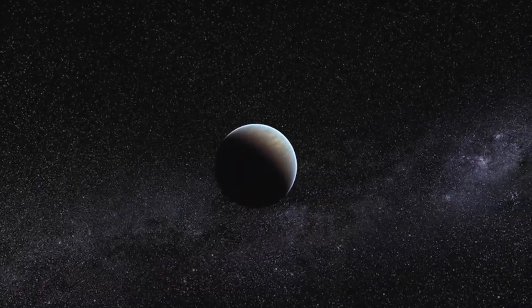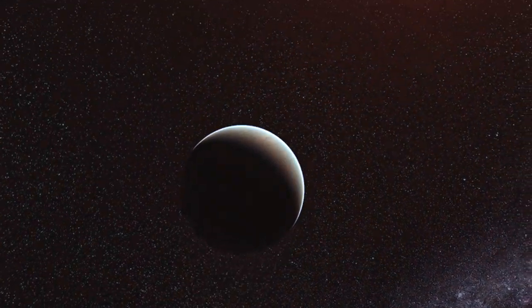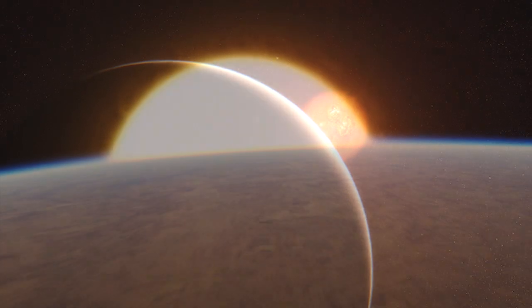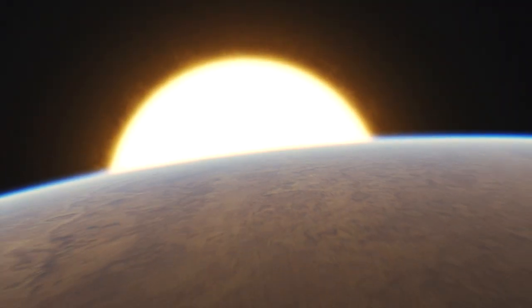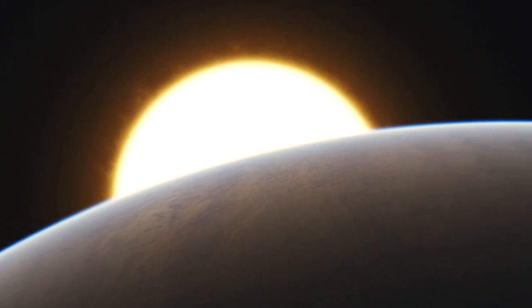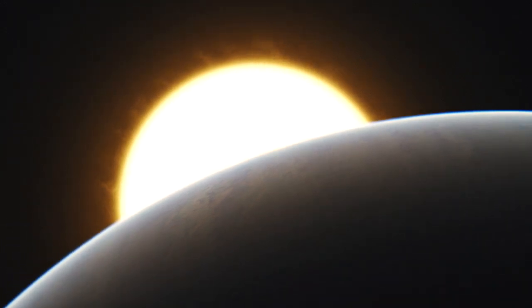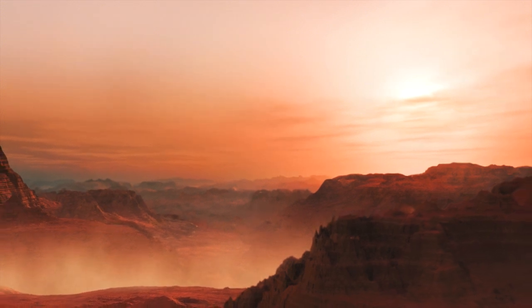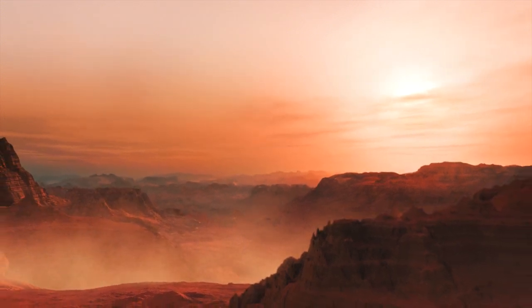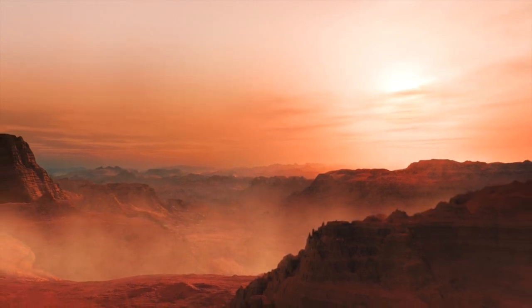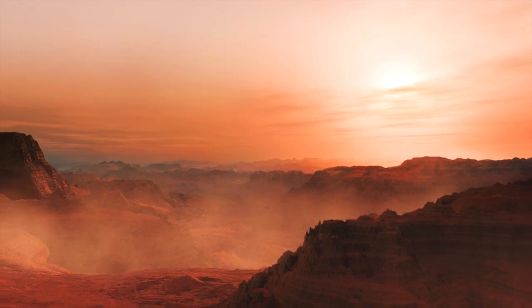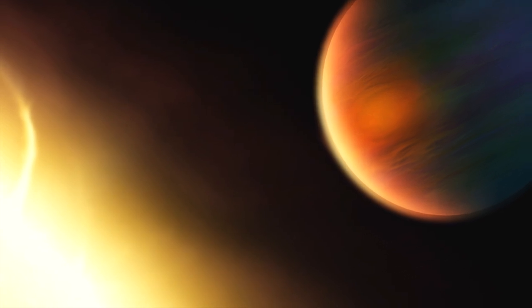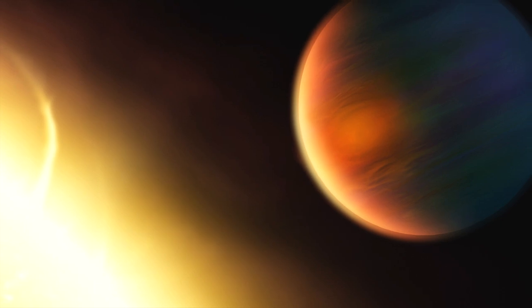Meet GJ 1214b, a super-Earth 2.6 times larger than our home planet. During transits, the planet's atmosphere partly absorbs the light of the parent star. ESO's SINFONI spectrograph revealed that GJ 1214b might well be a hot and steamy sauna world.